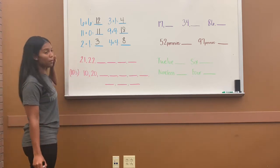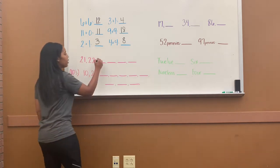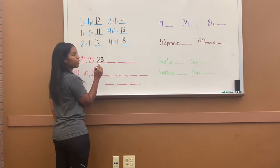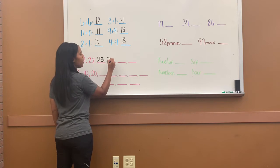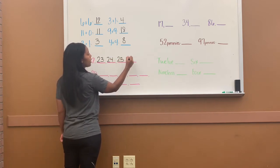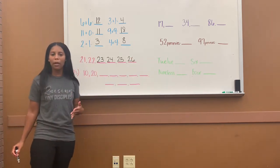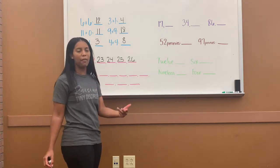Alright, so I have 21, counting by 1's. 21, 22, 23, 24, 25, and 26. So this is counting by 1's. Whenever we count by 1's, we just say the number that comes after it.